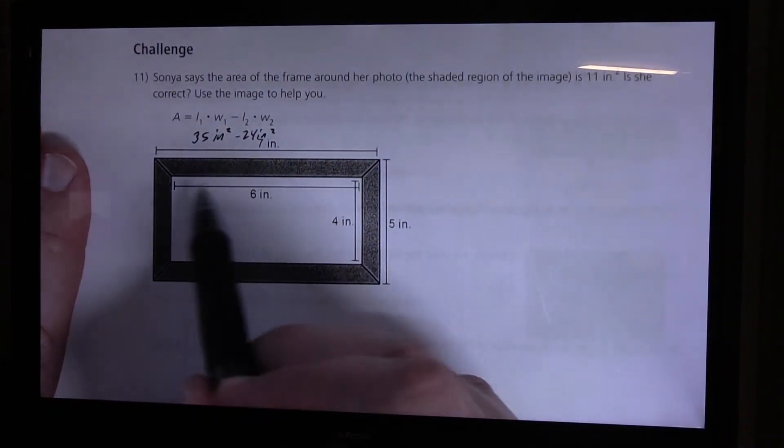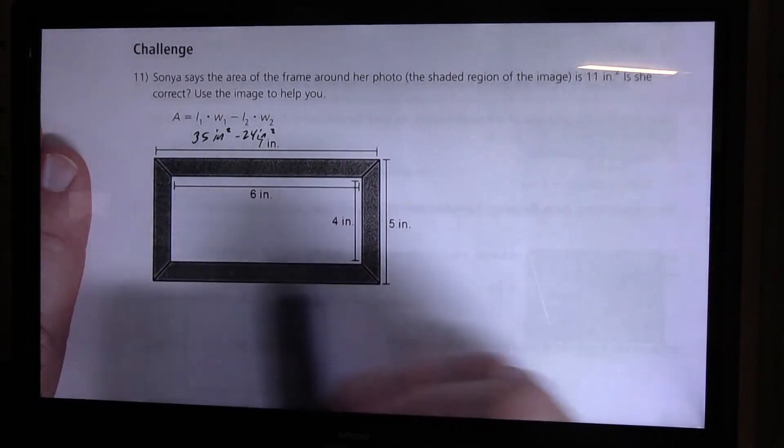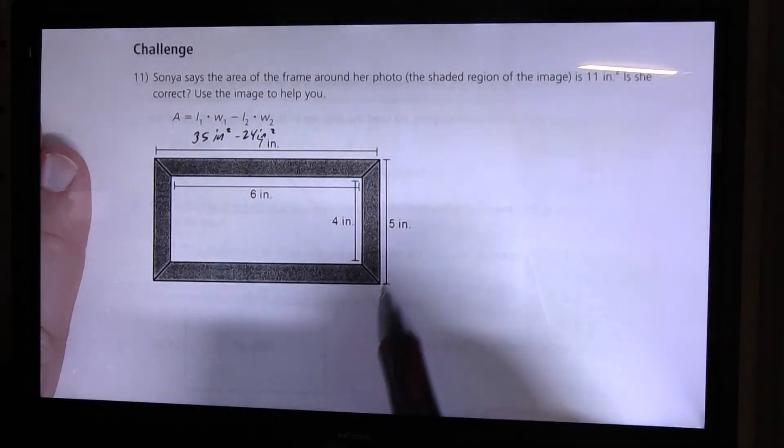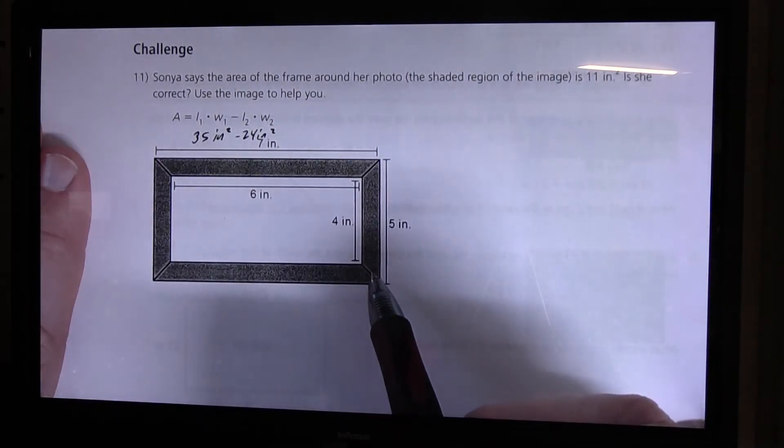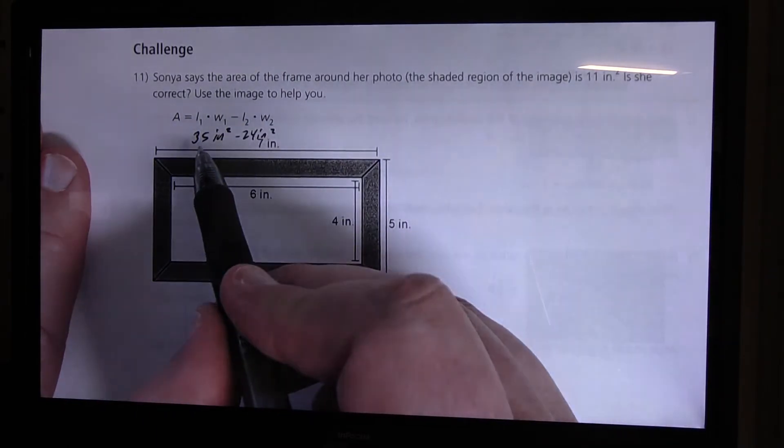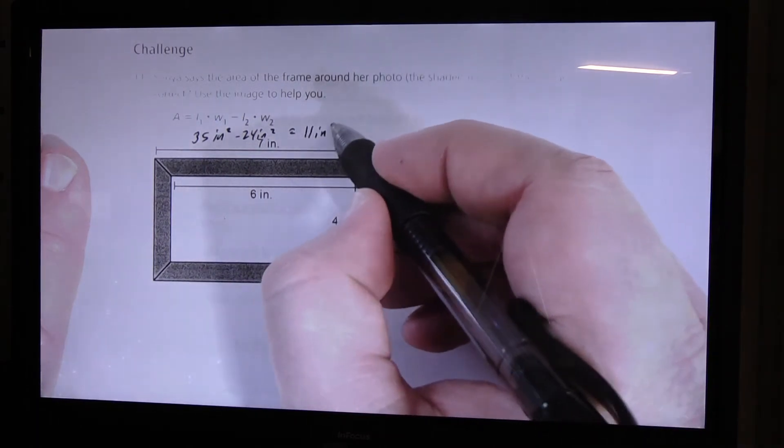So when I subtract the area that's here, when I subtract this area here from the outer edge of the frame or the border here, 35 subtract 24 equals 11 inches square.